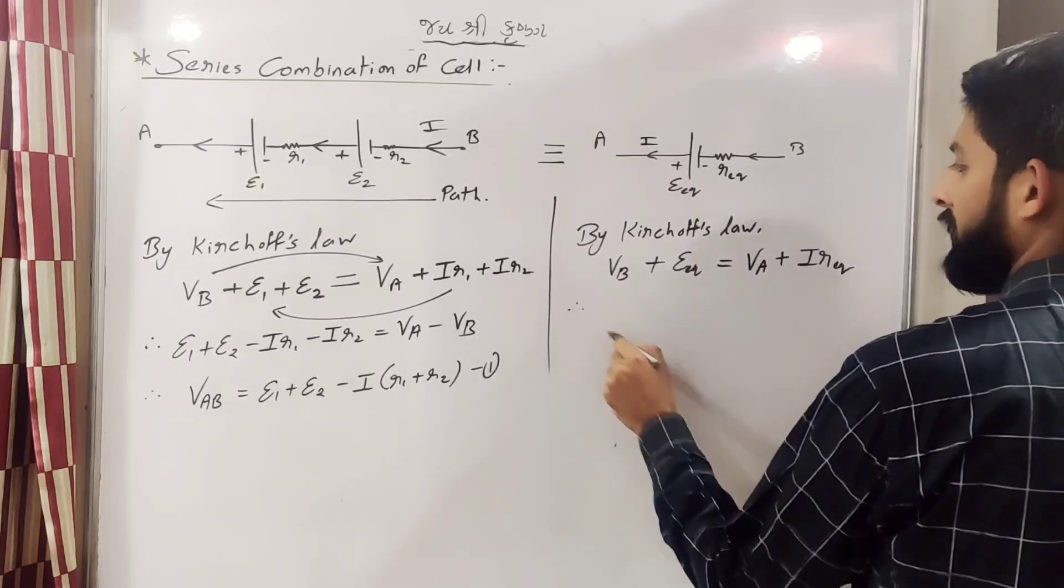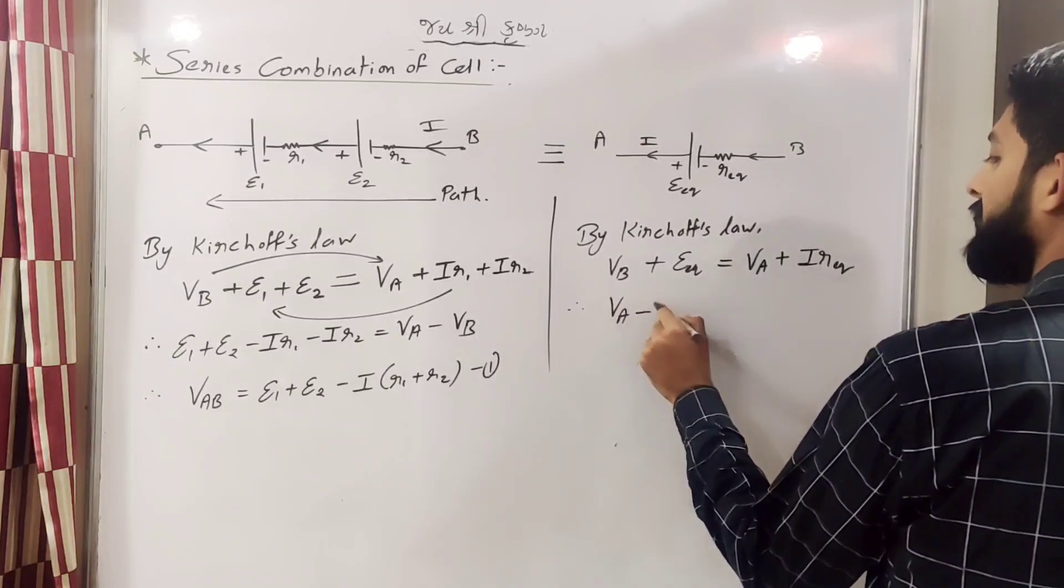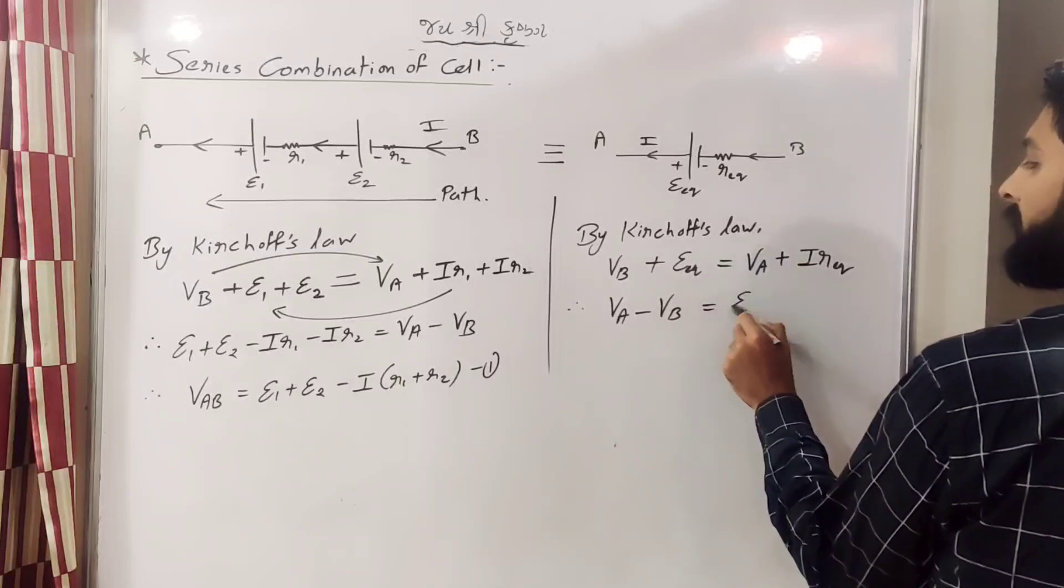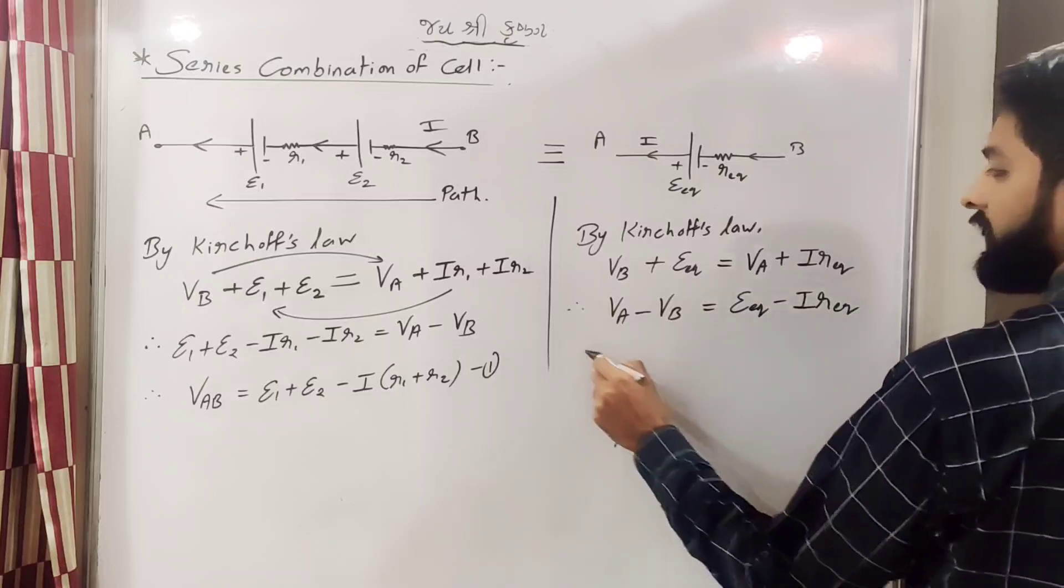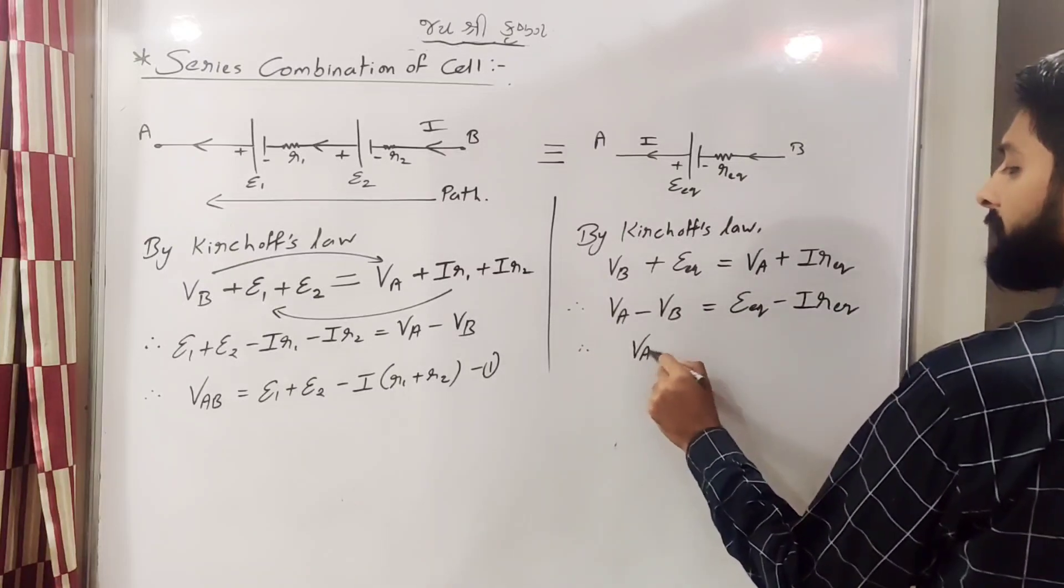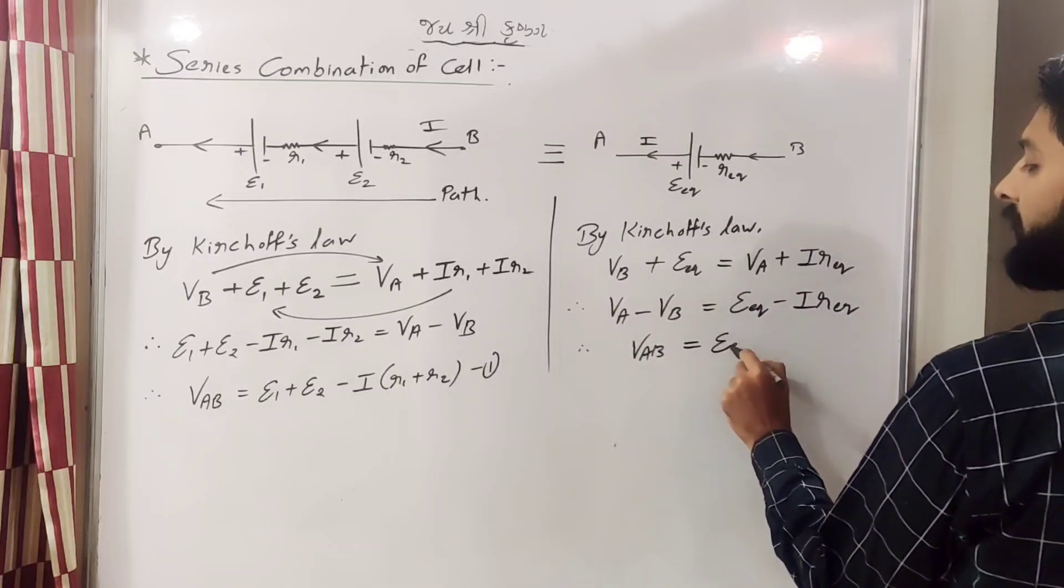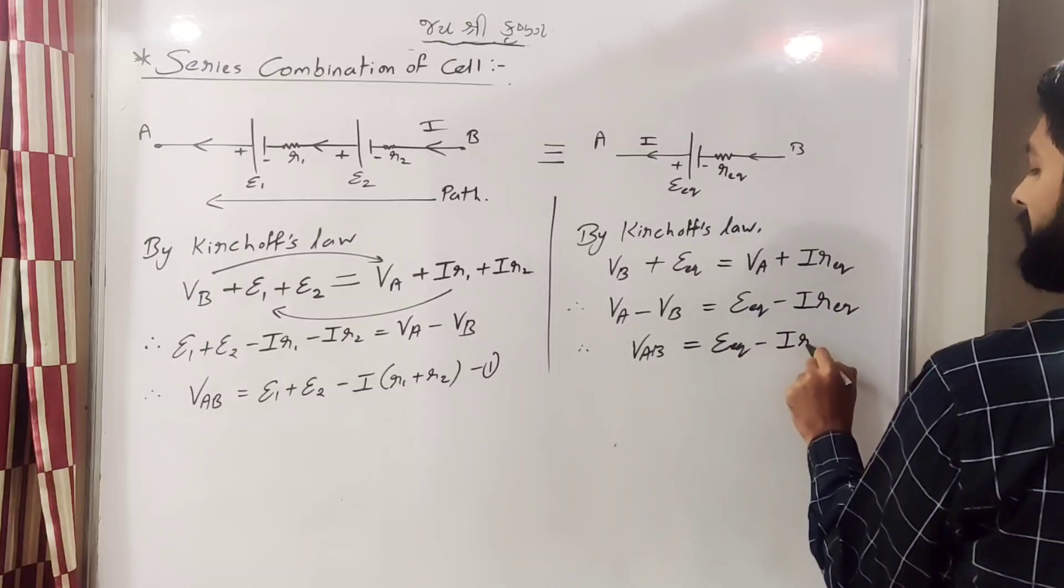Again VB and here final VA. So here plus epsilon equivalent and here plus IR equivalent. Okay, so VA minus VB, so that will be equal to epsilon equivalent minus IR equivalent. So potential drop kitna hoga.